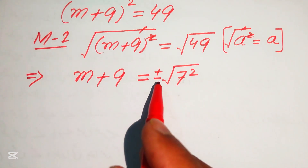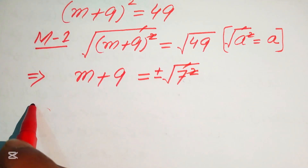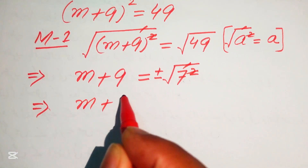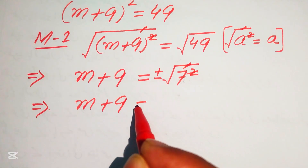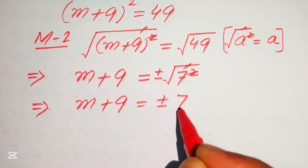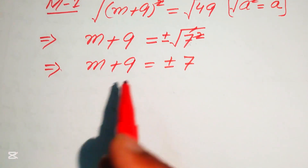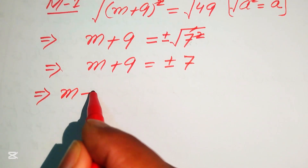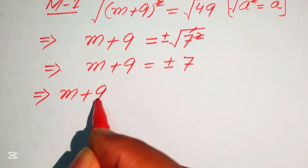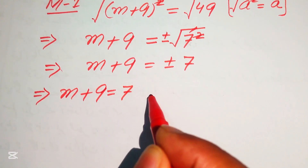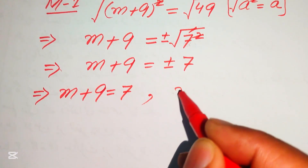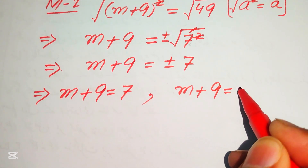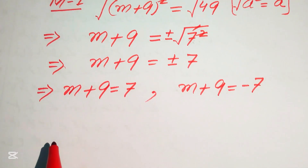So the square and square root cancel, and we get m + 9 = ±7. We break this into two cases: m + 9 = +7 and m + 9 = −7.